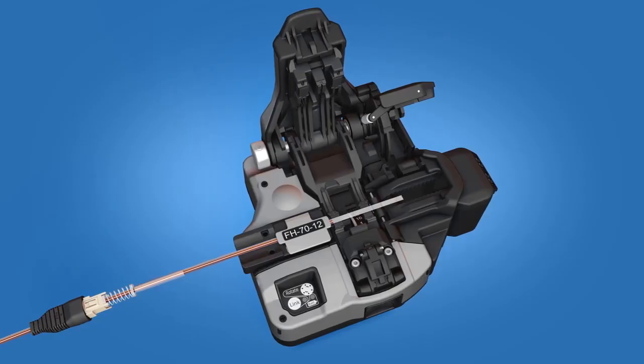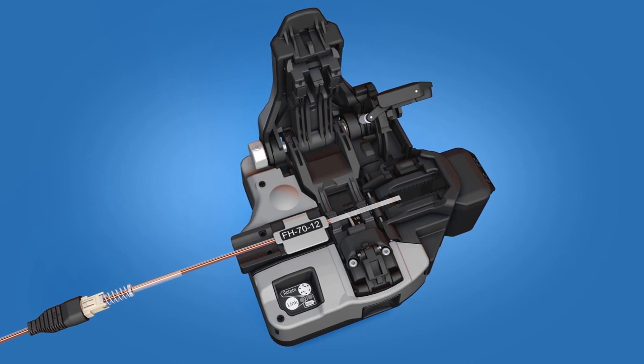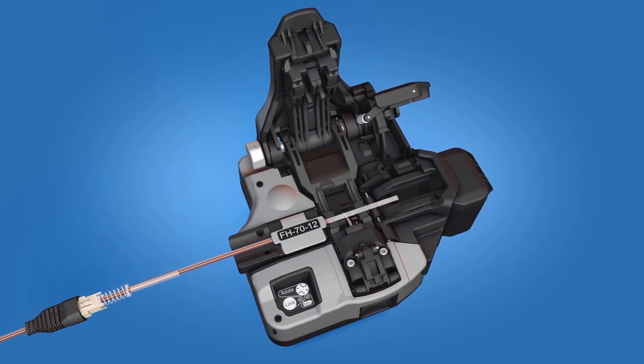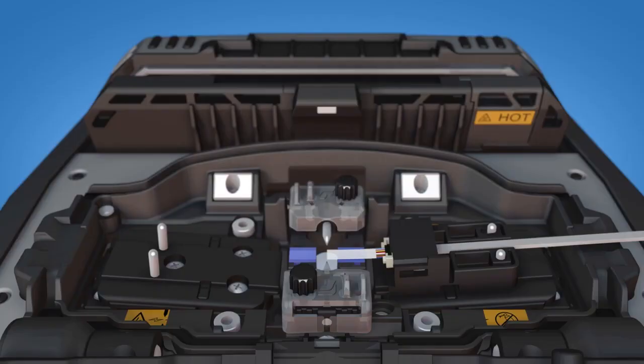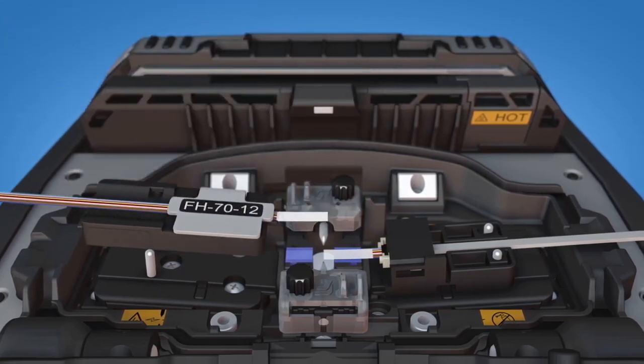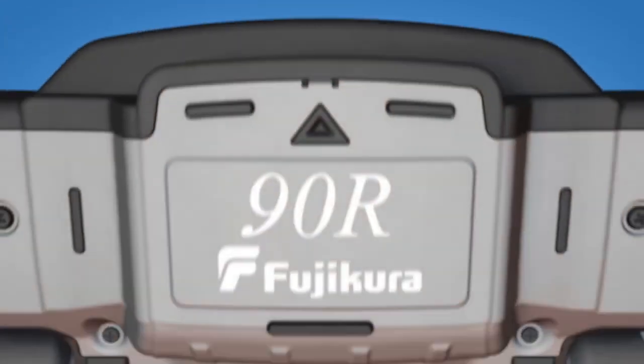Place the fiber holder onto the cleaver. The fiber holder should be flush and flat in the cleaver. Cleave the fiber. Load the fiber holder onto the left side of the splicer and close the cover.